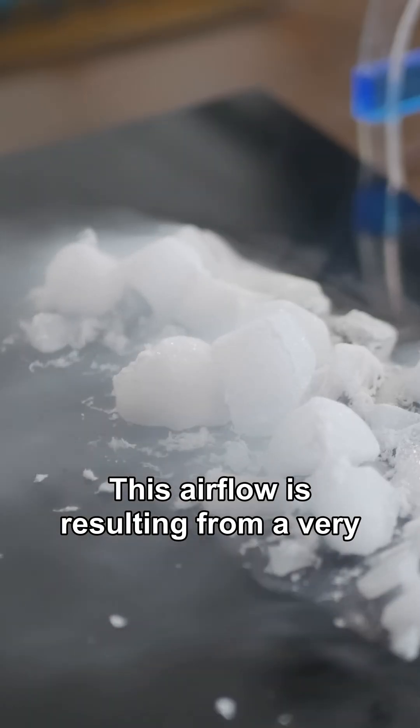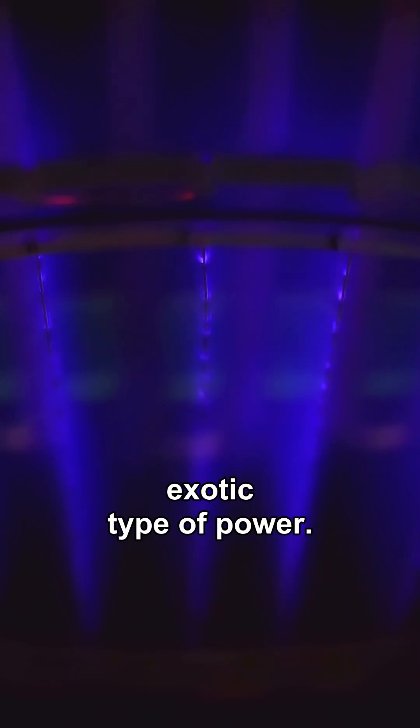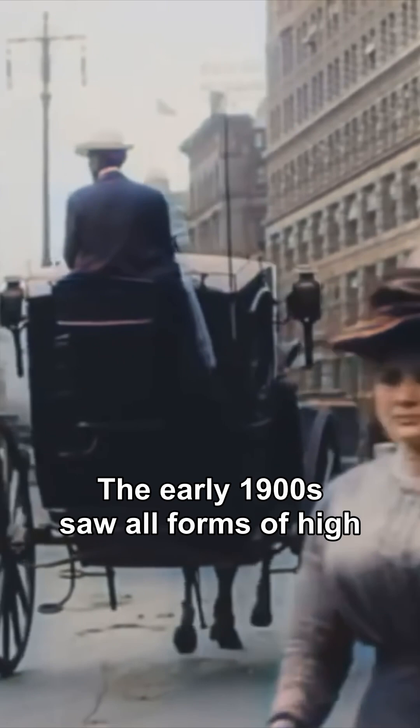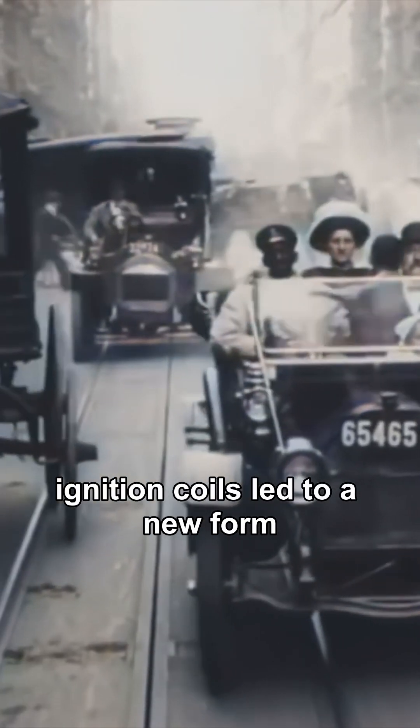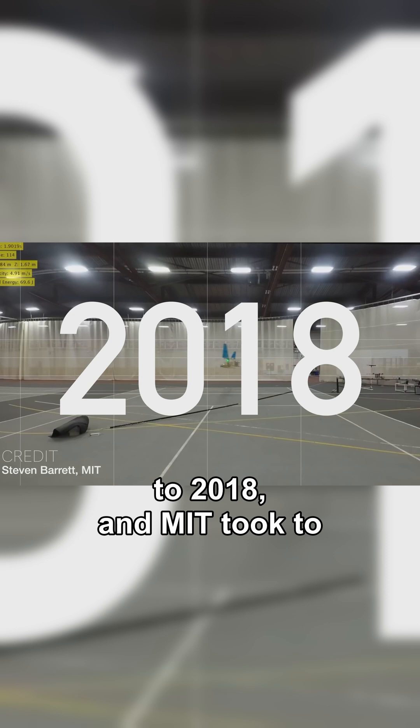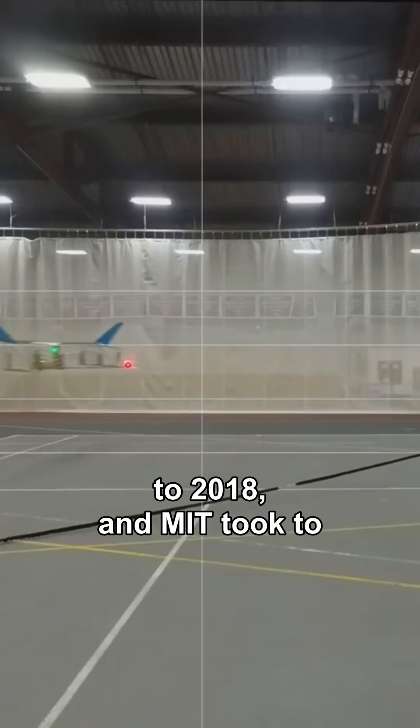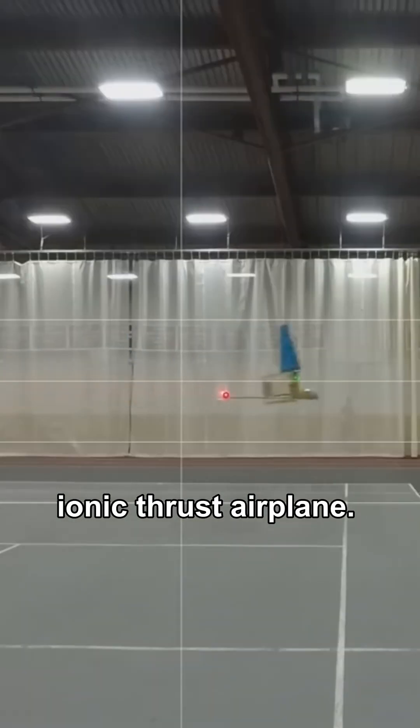This airflow is resulting from a very special type of thruster using an exotic type of power. The early 1900s saw all forms of high-voltage innovation and ignition coils led to a new form of ground transportation. Fast forward to 2018 and MIT took to the skies with an ionic thrust airplane.